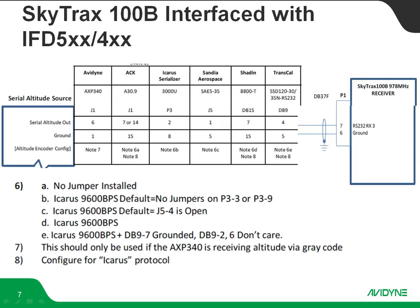The bright side is we've got some options, and this information is all in the installation manual. The Avidyne AXP 340 sends out Icarus format — just remember you probably don't want to use that unless the AXP 340 is receiving its altitude via gray code, otherwise you might get an altitude loop issue. Other compatible options include the ACK 30.9, Icarus 3000U, Sandia Aerospace SAE 5-35, Shadin 8800T, and Transcape SSD 120. Basically anything RS-232 compatible can be used. You can also use ARINC 429 to get altitude to the Skytrax 100B, as long as it is sending label 203 and is a certified altitude source.